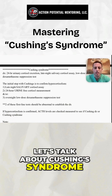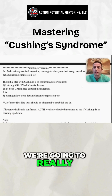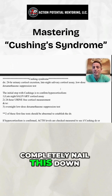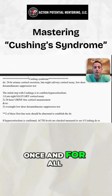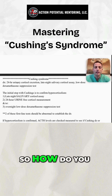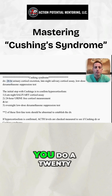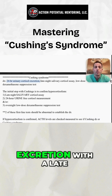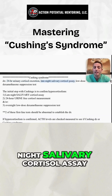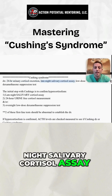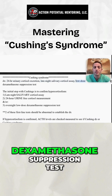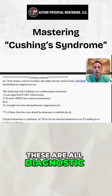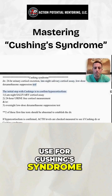Let's talk about Cushing's syndrome — we're going to really dive deep here, and I want you to completely nail this down once and for all. How do you diagnose Cushing's syndrome? You do a 24-hour urine cortisol excretion, a late-night salivary cortisol assay, and a low-dose dexamethasone suppression test. These are all diagnostic workup tools you can use for Cushing's syndrome.